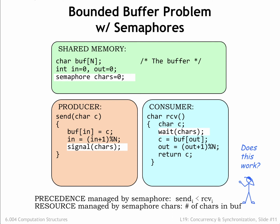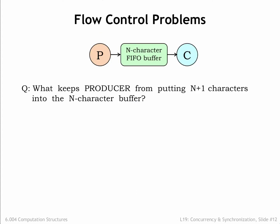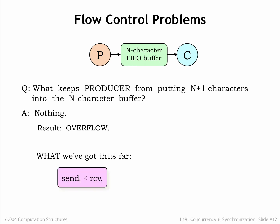Does this mean our producer and consumer are now properly synchronized? Using the chars semaphore, we implemented one of the two precedence constraints we identified as being necessary for correct operation. Next we'll see how to implement the other precedence constraint. What keeps the producer from putting more than N characters into the N-character buffer? Nothing. The producer can start to overwrite characters placed in the buffer earlier even though they haven't yet been read by the consumer. This is called buffer overflow, and the sequence of characters transmitted from producer to consumer becomes hopelessly corrupted. What we've guaranteed so far is that the consumer can read a character only after the producer has placed it in the buffer — in other words, the consumer can't read from an empty buffer. What we still need to guarantee is that the producer can't get too far ahead of the consumer. Since the buffer holds at most N characters, the producer can't send the (i+N)-th character until the consumer has read the i-th character.